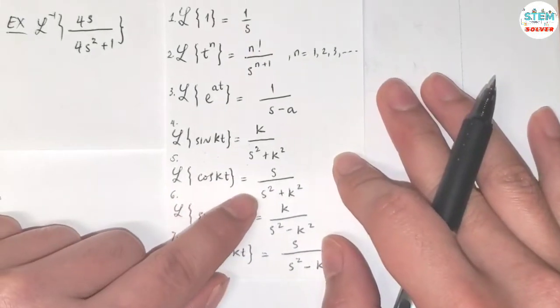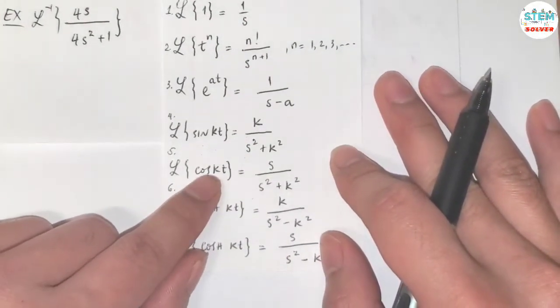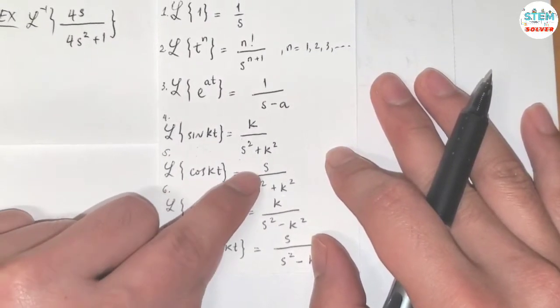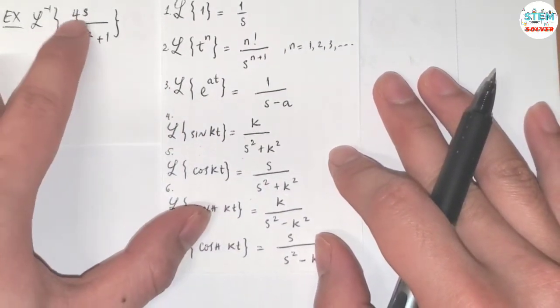So it's almost cosine of kt, right? It looks almost cosine. So we need to have s on top, only s on top. So first of all, I'm going to pull out the 4.